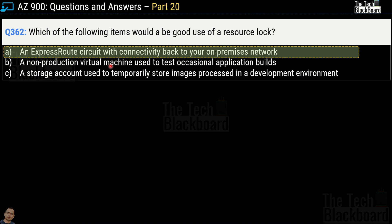The non-production virtual machine is not business-critical, and the storage account in a development environment is also not business-critical. Only the first option refers to a production environment, which is why it's a good idea to safeguard your production connectivity with a resource lock. I hope you understood why we chose option A.